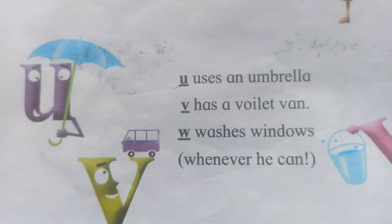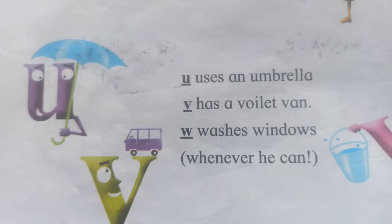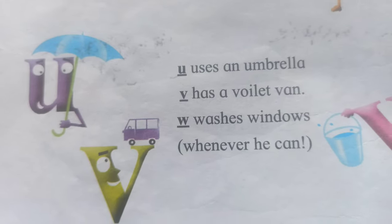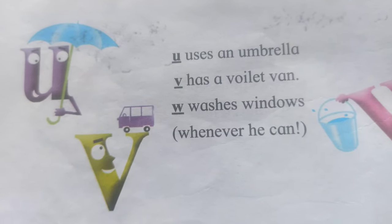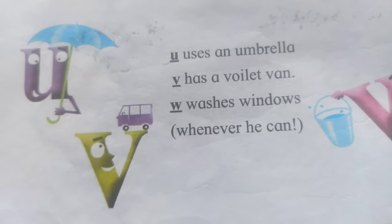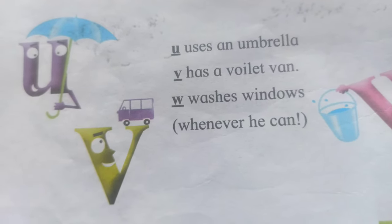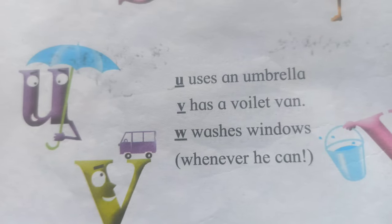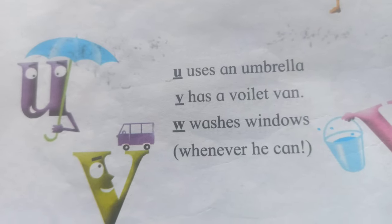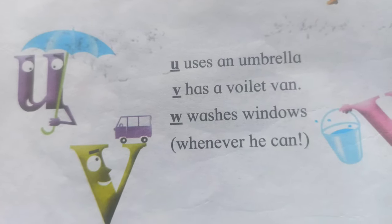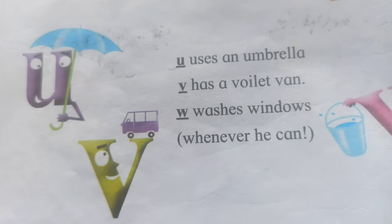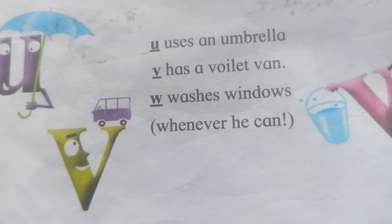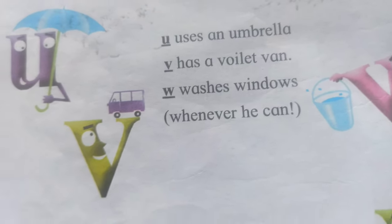U — uses an umbrella, V — has a violet wand, W — washes windows whenever he can. U — uses an umbrella, V — has a violet wand, W — washes windows whenever he can.